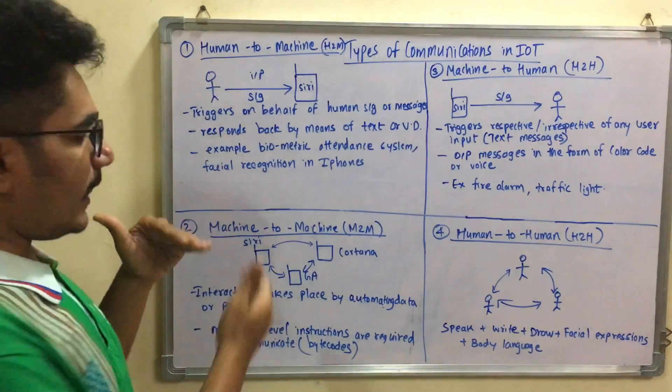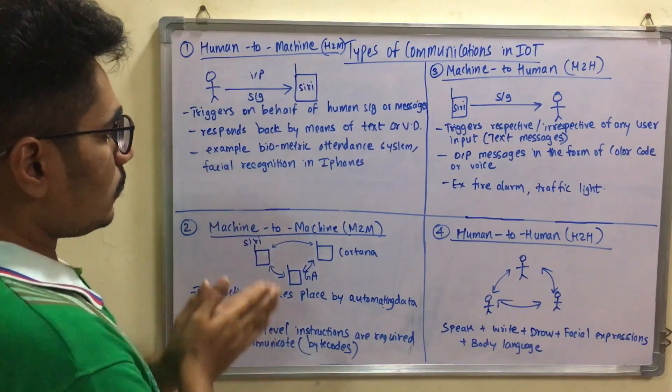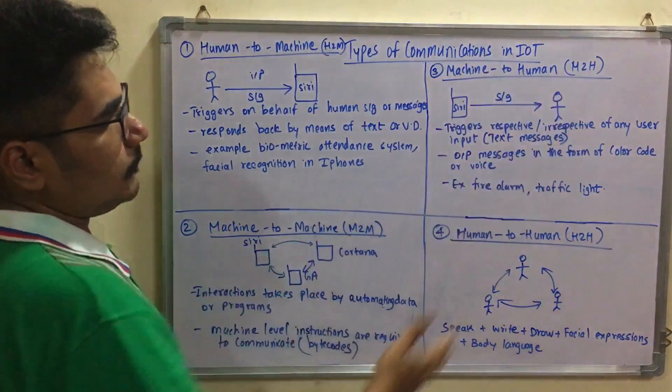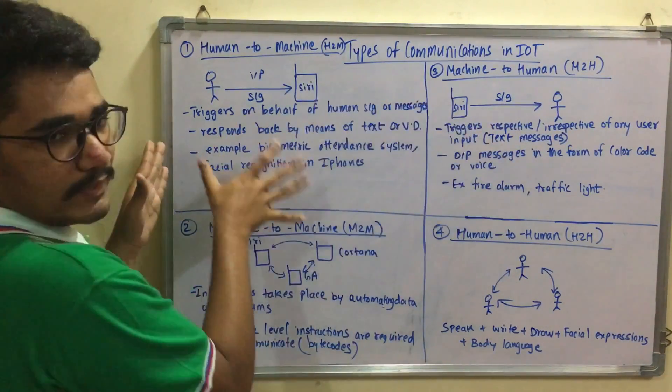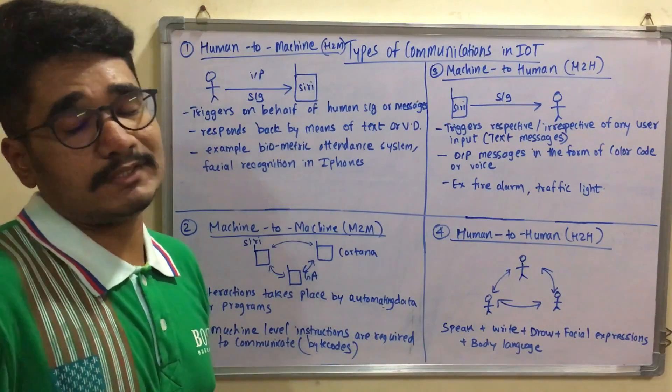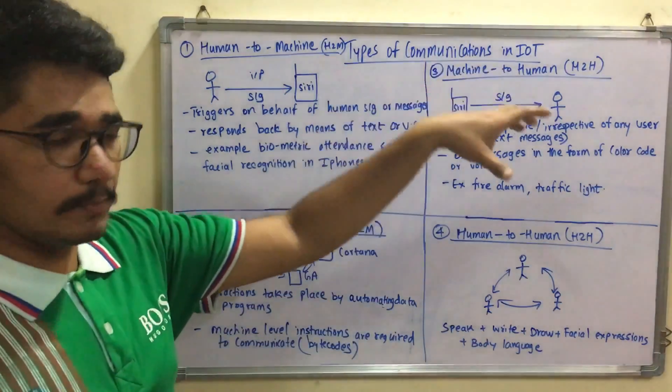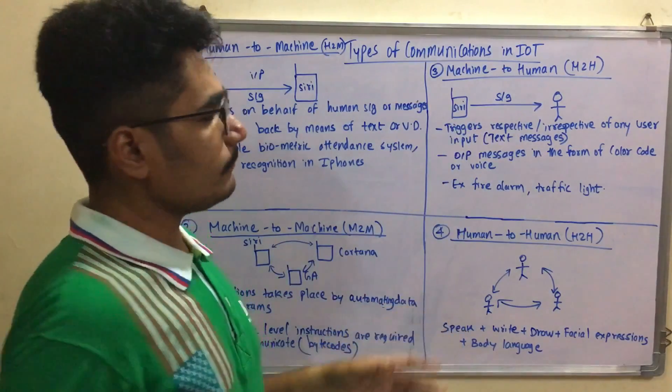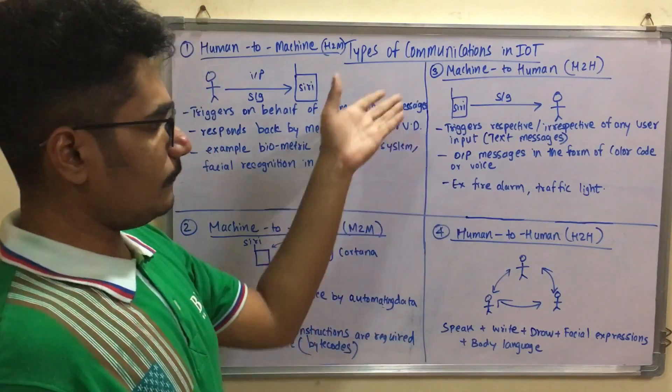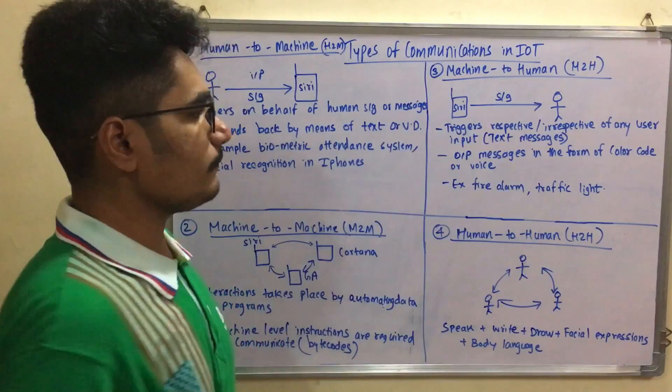First we have human to machine, then machine to machine, and then Machine to Human interaction, M2H. This is the response when a human asks Siri something like "what's the weather today?" and it responds back to the human. The machine communicates with the human by color codes, voice, or other triggers. A simple example is when it triggers irrespective of user input.